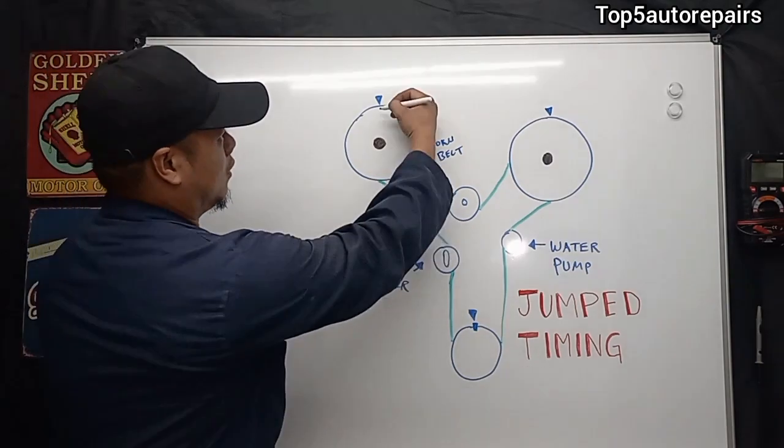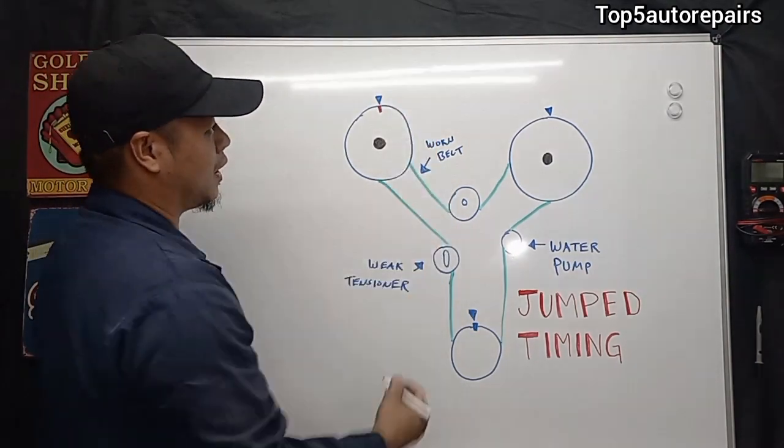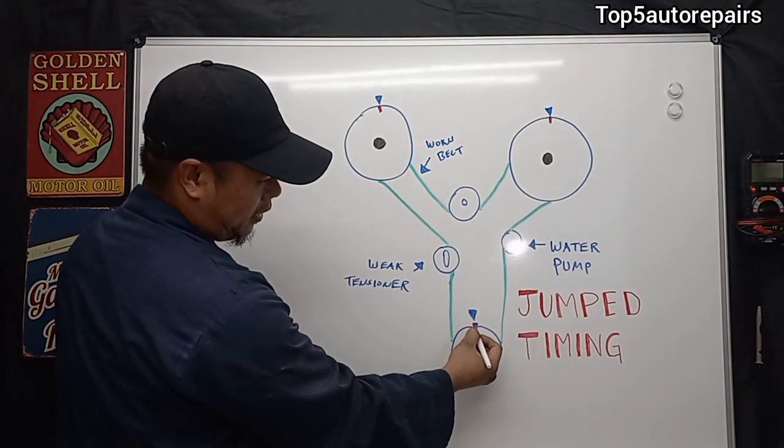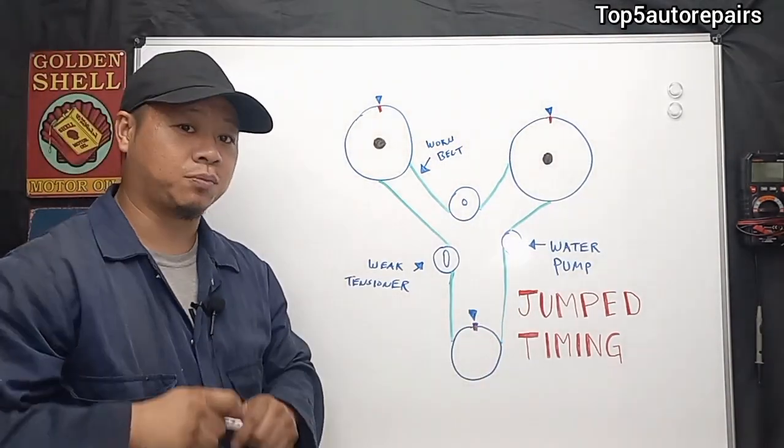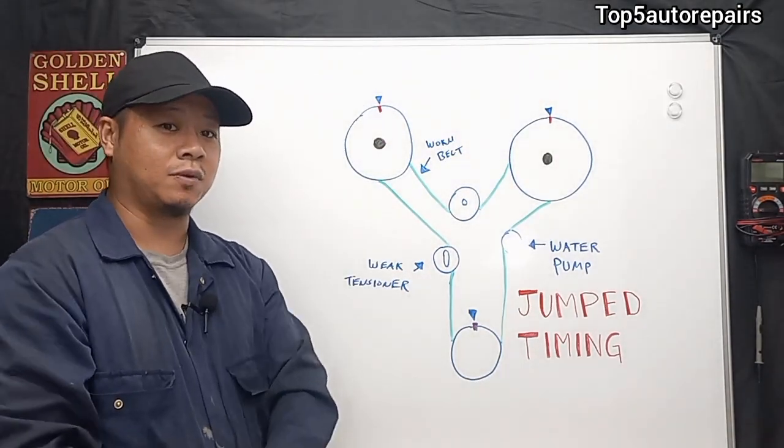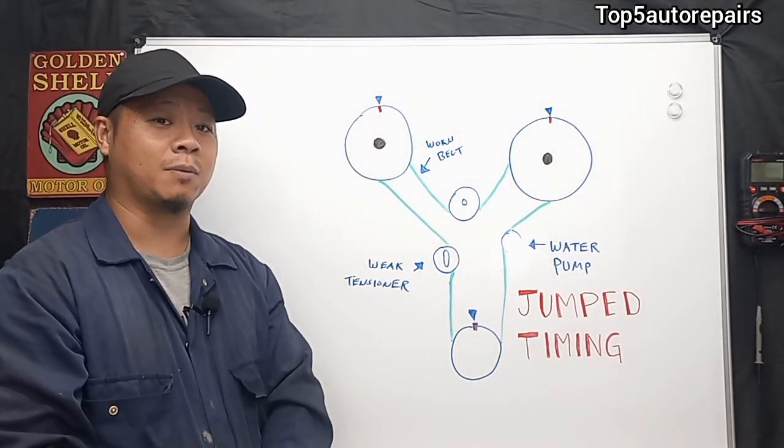For example, on the camshaft sprocket you're going to have a timing mark here, timing mark over here, and of course one here on the crankshaft sprocket. If one of the timing is off, this can really cause catastrophic damage to your engine.